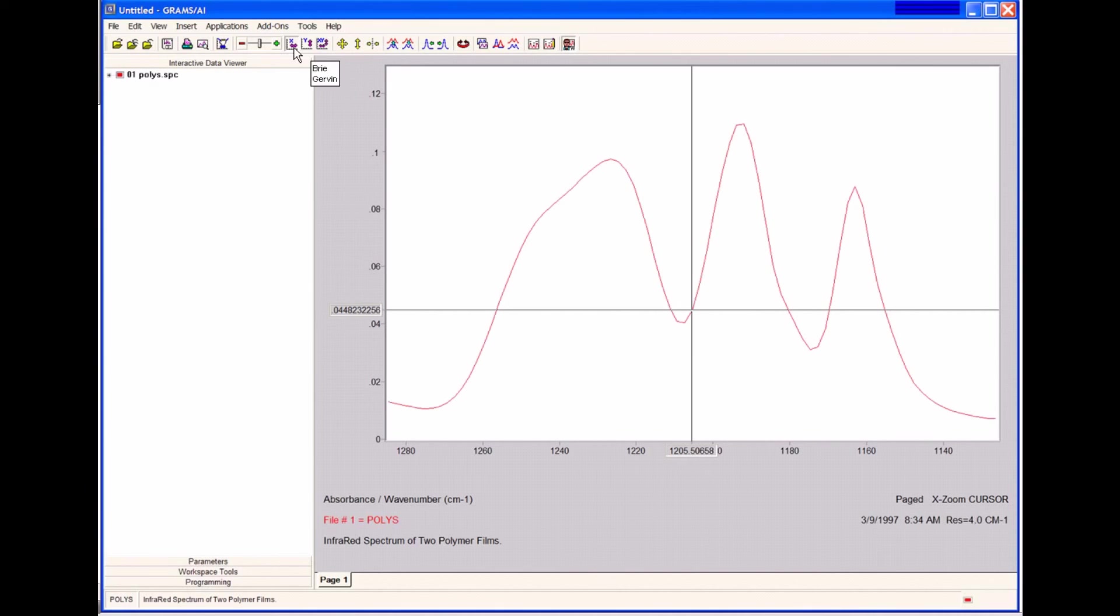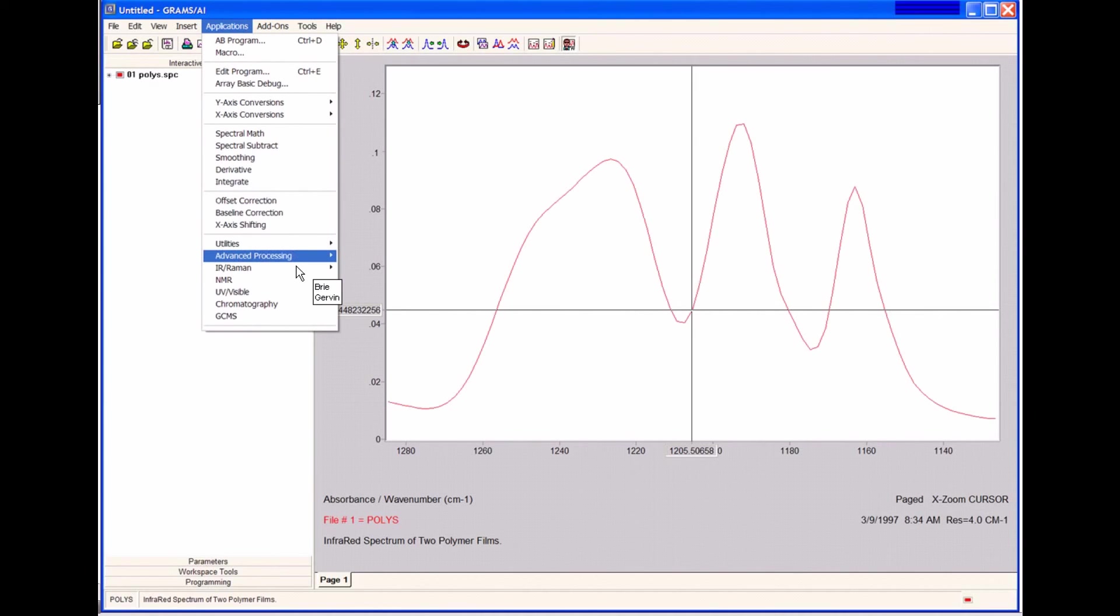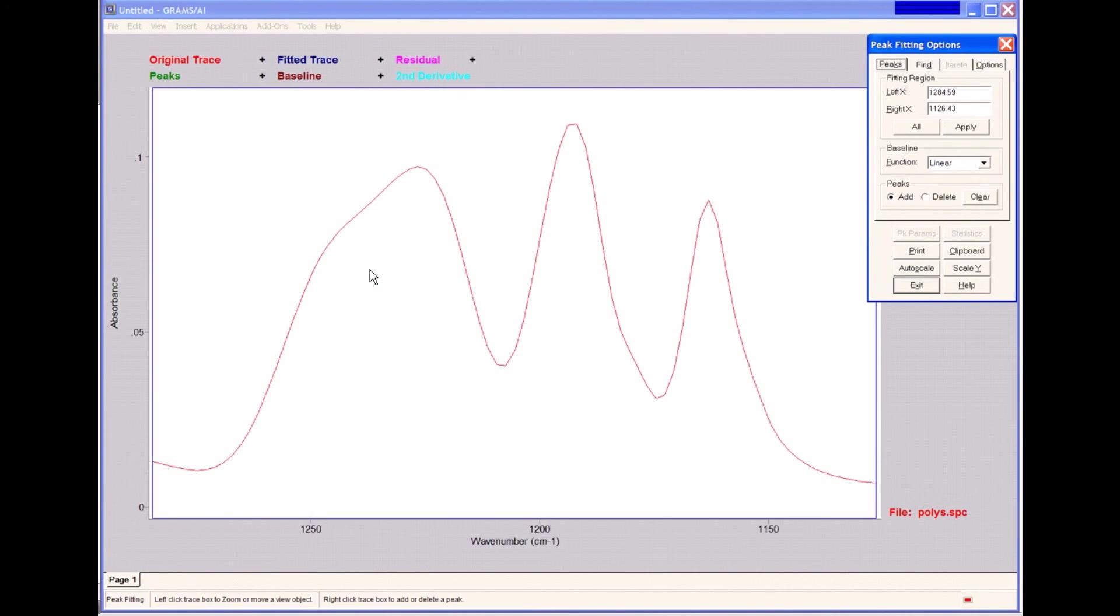To run peak fitting, we need to go to our applications menu, advanced processing, and choose peak fitting. This brings us into the peak fitting user interface.